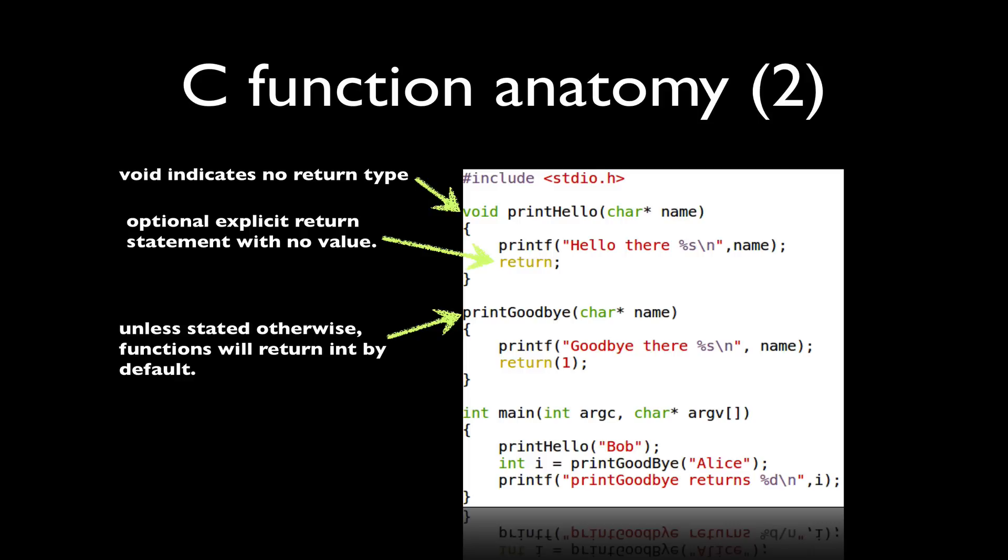In this case, whenever we invoke this function, it's going to expect us to return an int value, and you can see that in this particular function we did return the value 1, because it's assumed to have a return type of int. If we did not have that return type, the compiler would complain.